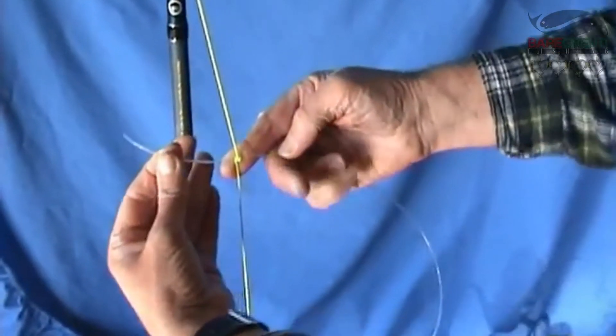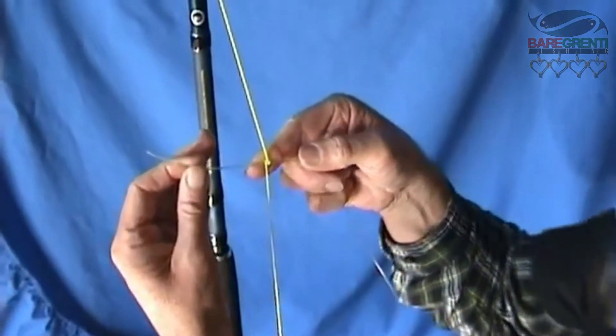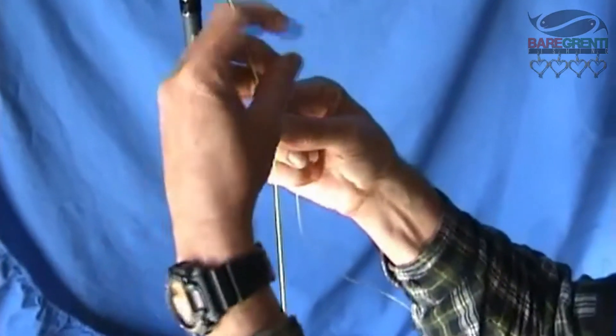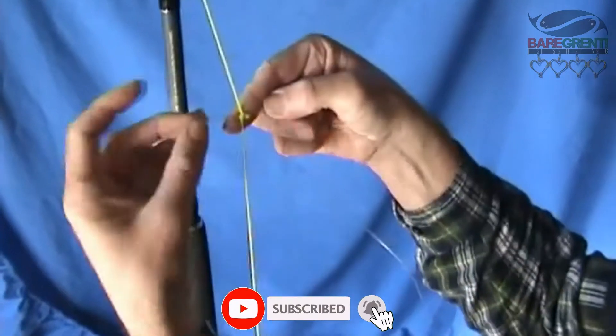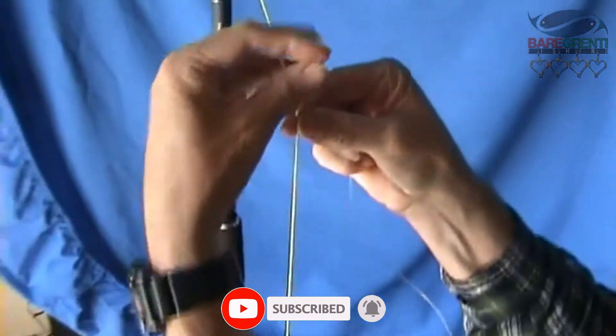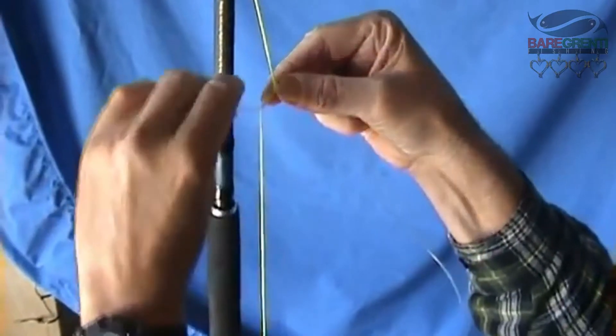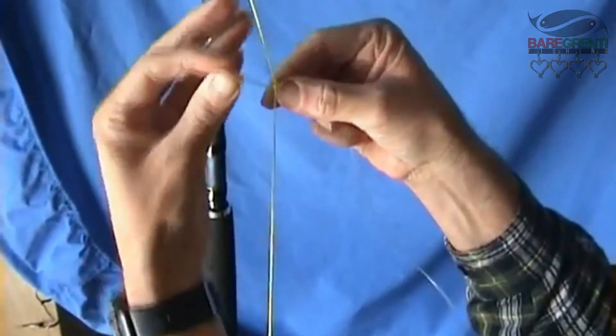Bring it around the front and underneath. Essentially what you're doing with that is you're twisting the braid around the mono. So you carry on like that, pull that up. You're going to carry on. You're going to do that around about 15 to 20 times.